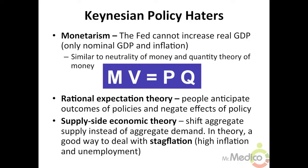Rational expectation theory also dislikes active economic policies by the government and central bank. It argues that people adjust their economic decisions based on anticipated outcomes of policies. For example, if the Fed announces it will buy bonds and keep interest rates low, people raise their inflation expectations and ask for higher wages — this would reduce output, even as the Fed is trying to increase it.